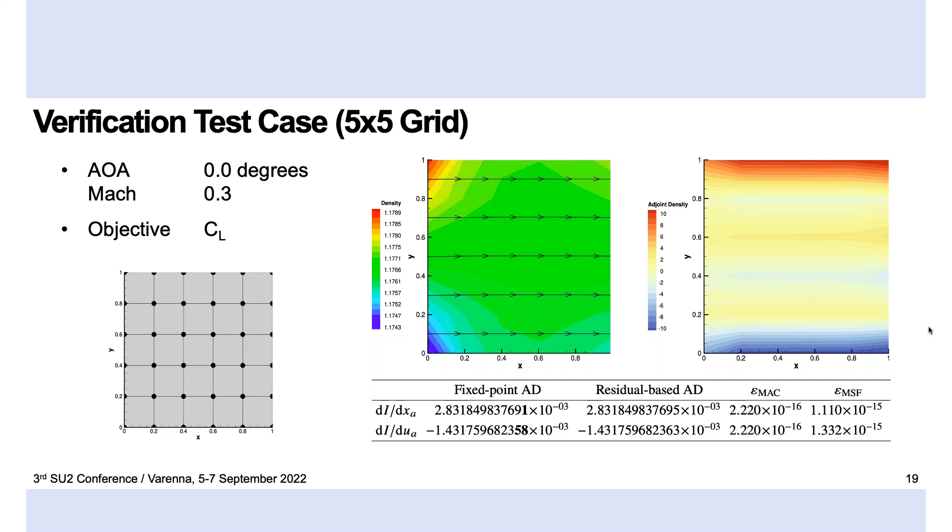What we did in order to compare the sensitivities throughout the flow domain, rather than looking at individual values, we compared the new formulation to the old fixed-point formulation with what is called the modal assurance criterion, as well as the corresponding modal scaling factor. Basically, this is a value that will tell you how collinear your vector is with respect to another vector. And because usually the results were quite good, we ended up looking rather at the order of magnitude of the error between the modal assurance criterion and the value 1, which indicates a perfect parallel match.